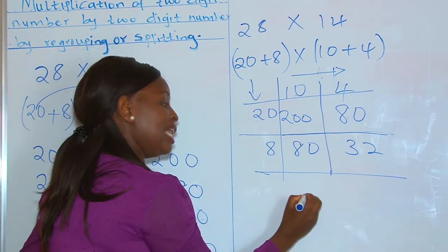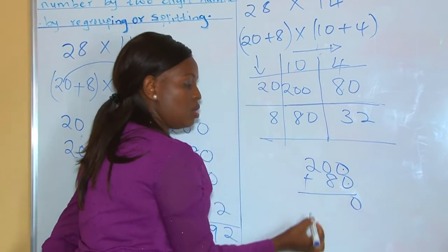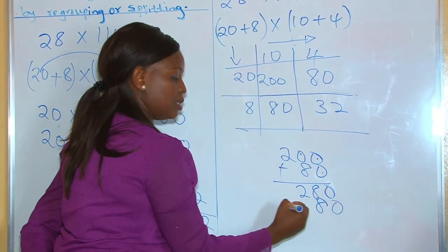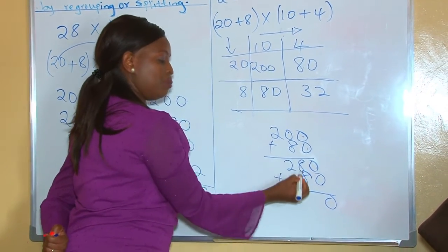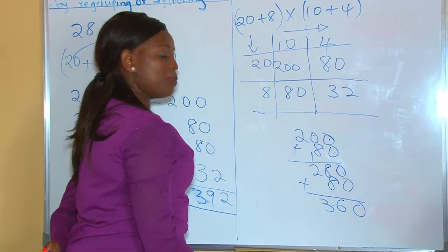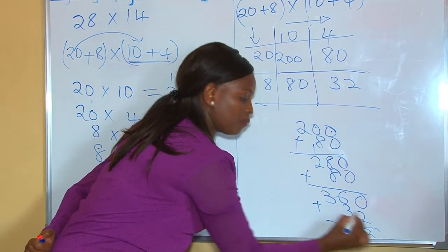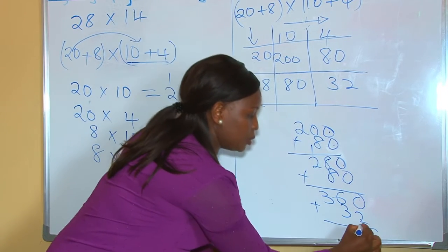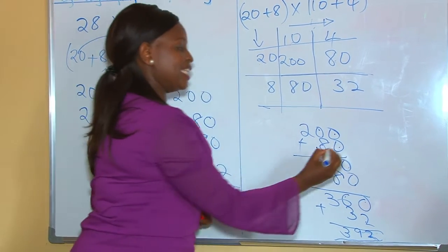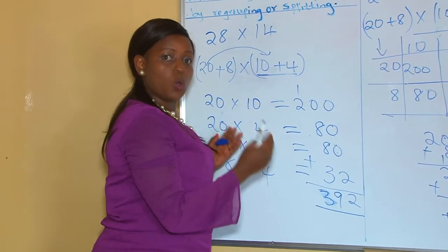Once we are done, now we add. Our first answer was 200, followed by 80. When we put them together: 0 plus 0 is 0, and 0 plus 8 is 8, and then we have our 2, giving 280. Our third answer, which is 80, we add it: 0 plus 0 is 0, 8 plus 8 is 16 — we write 6 and carry 1, then 1 plus 2 is 3. We proceed — we are not finished. We add the last answer, 32: 0 plus 2 is 2, and 6 plus 3 is 9, and our 3 has nothing there. So we are still getting the same answer, which is 392.